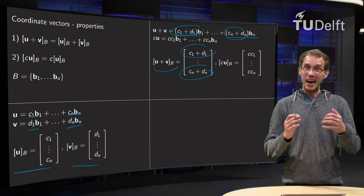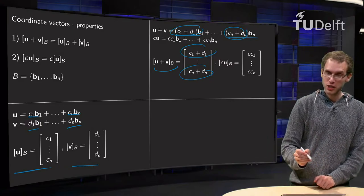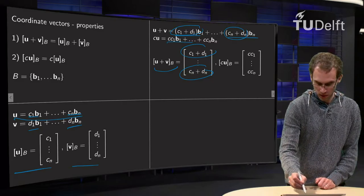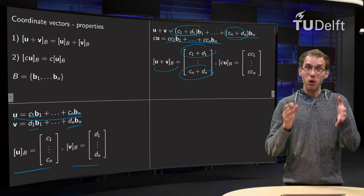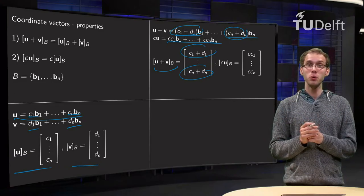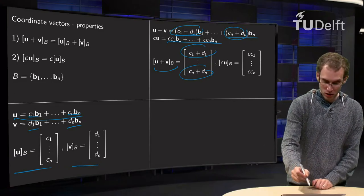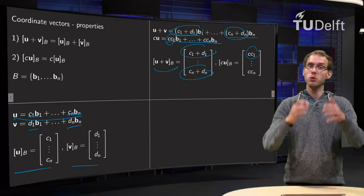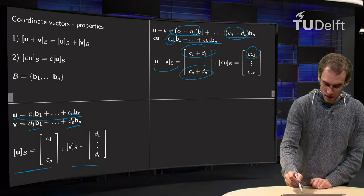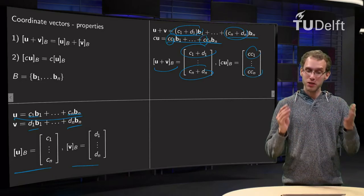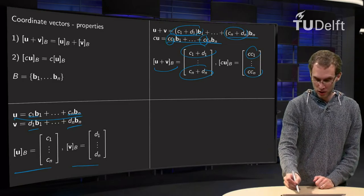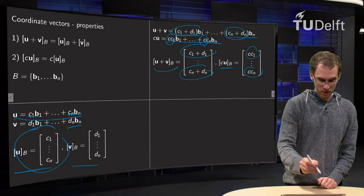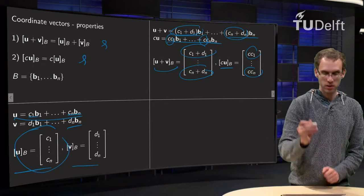What about scalar times u? If we compute scalar c times our vector u, we get c·c1·b1 plus c·c2·b2 plus ... plus c·cn·bn. The coordinate vector of c times u has weights c·c1, c·c2, ..., c·cn, which is exactly c times the coordinate vector of u. So both properties are now established.